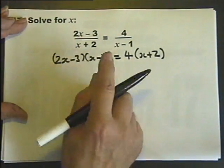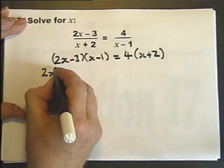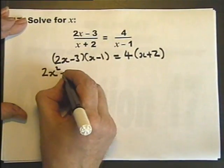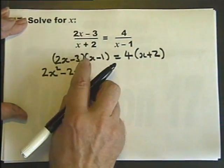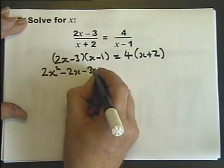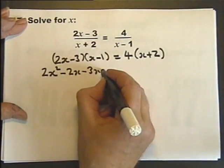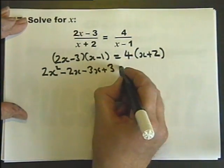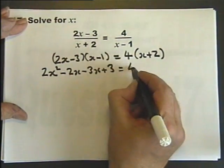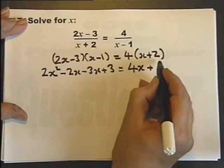Let's expand these brackets. 2x times x, then 2x times minus 1, minus 3 times x, and minus 3 times minus 1. Expand these brackets: 4 times x and 4 multiplied by 2.